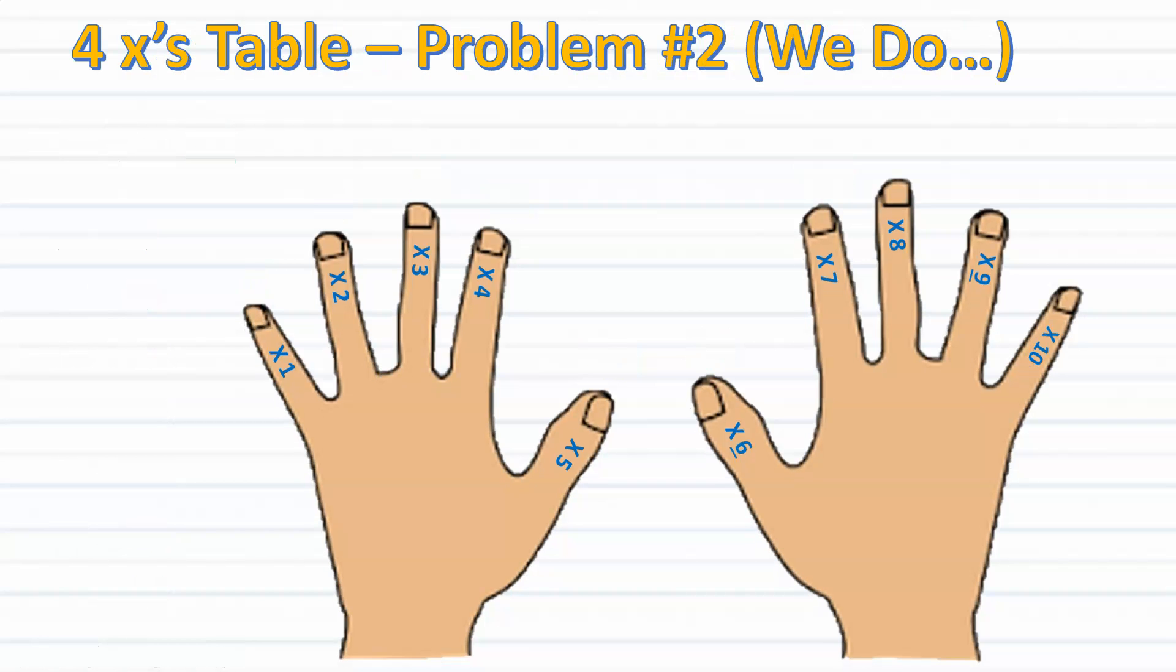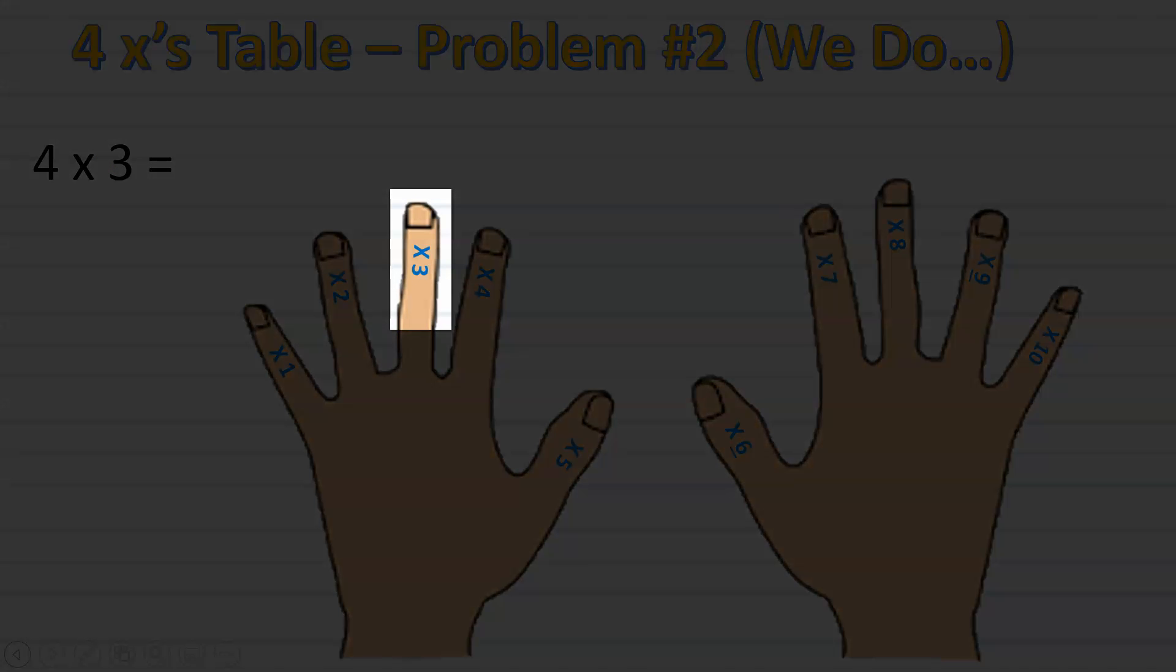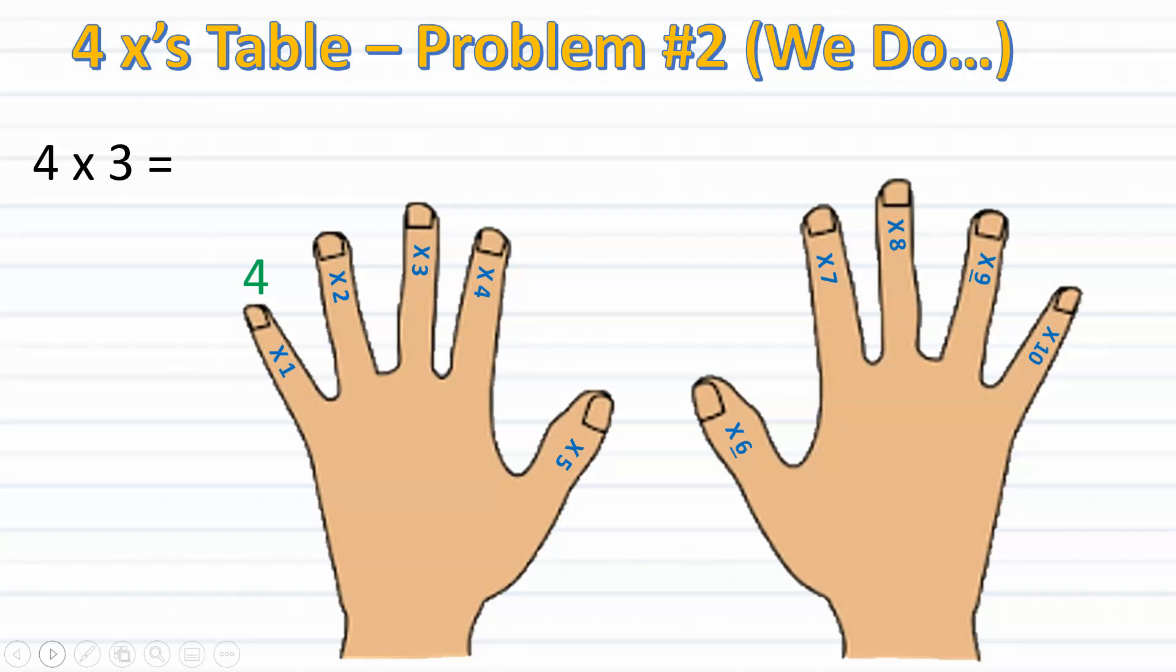Ready for another problem? This time, try singing along with me to solve for 4 times 3. Let's begin. Since we're multiplying 4 times 3, we have to stop at our third finger. So let's begin singing. 4, 8, 12. Since I reached my third finger and I said 12 last, I know that 4 times 3 equals 12.